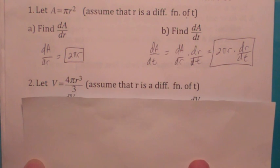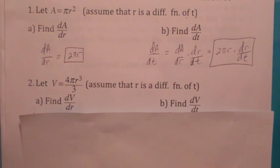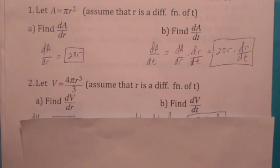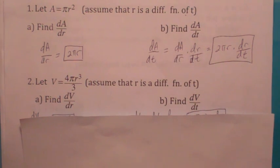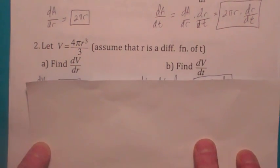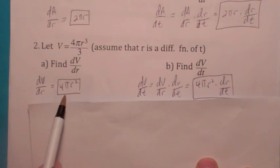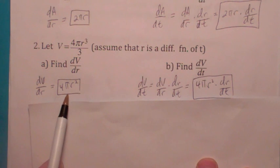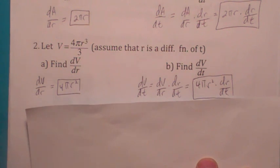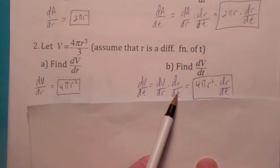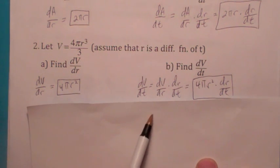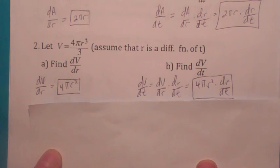Here's a similar problem. Again we're assuming r is a differentiable function of t. Do you know the difference between dV/dr and dV/dt? When you take the derivative of what's inside on the left, the derivative of r is just 1, so you just get the surface area, 4πr². But when you take the derivative of what's inside here, you get a dr/dt. So it's 4πr² dr/dt.